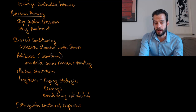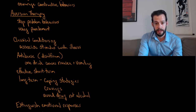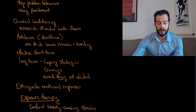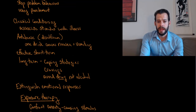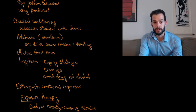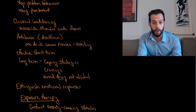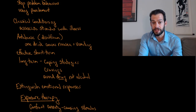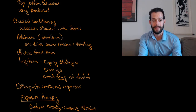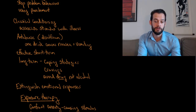We can also apply aversion therapy to more serious situations like alcoholism, using the principles of classical conditioning to associate a stimulus with illness. This is done with a drug called Antabuse — disulfiram — which causes nausea and vomiting if you drink alcohol while taking it, even from just one drink. The idea is that you'll associate that illness with the alcohol according to classical conditioning, helping you to avoid alcohol in the future.